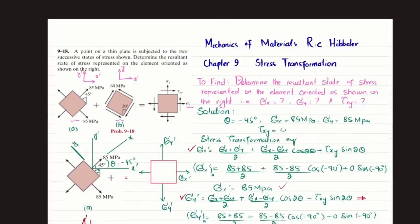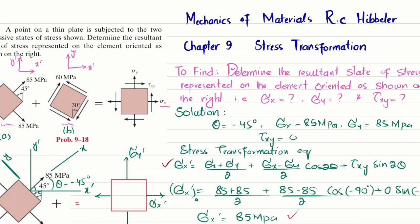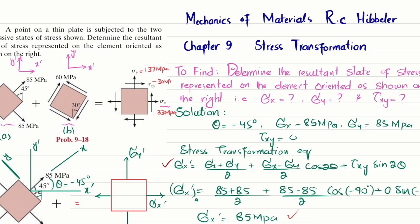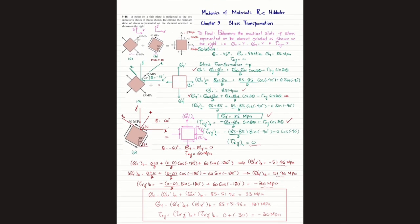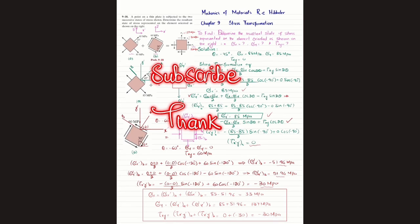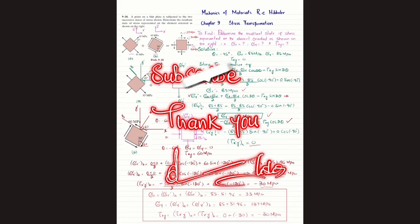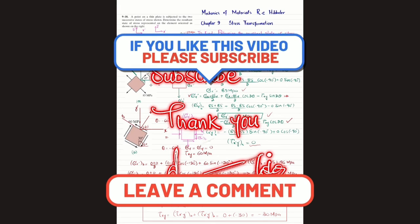In summary, sigma x equals 33 MPa, sigma y equals 137 MPa, and tau xy equals minus 30 MPa. That is all about problem 9-18. I hope you enjoyed this video and learned from it. If you're new to my channel, please subscribe and press the bell icon for notifications. If you have any questions, ask in the comment section. Thank you for watching.